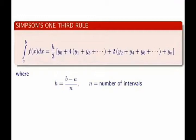Hello viewers, in this video we will write a C program to evaluate numerical integration using Simpson's one-third rule. Now the working rule for Simpson's one-third method is: integral a to b f(x)dx equals to